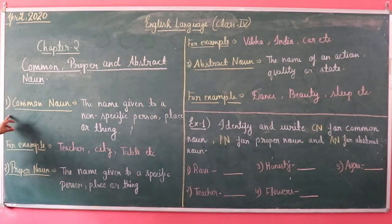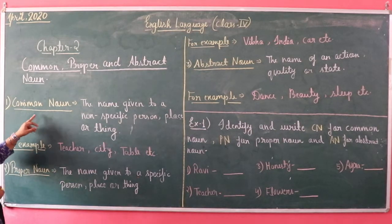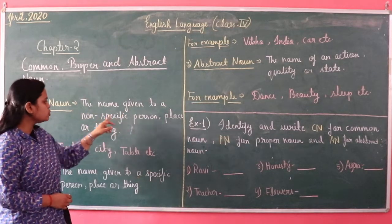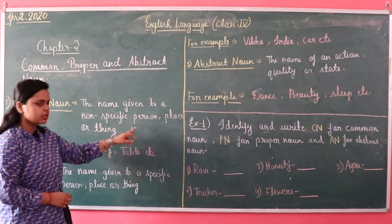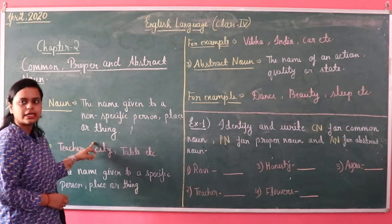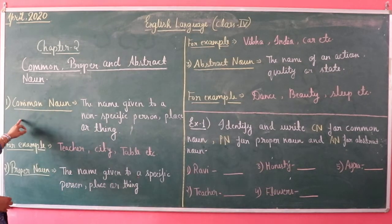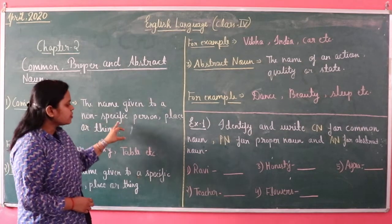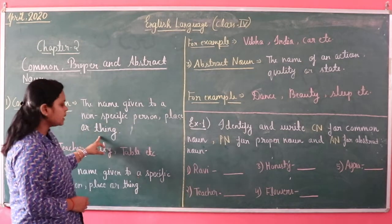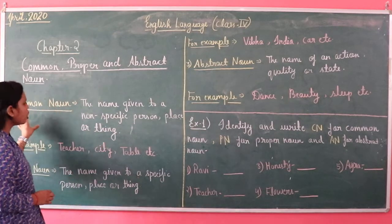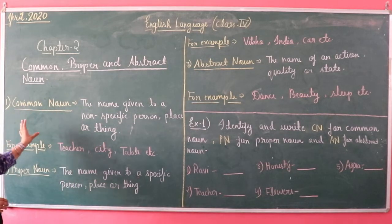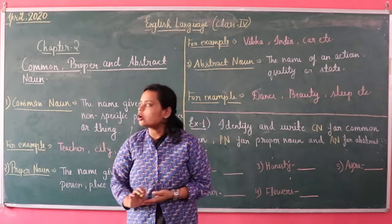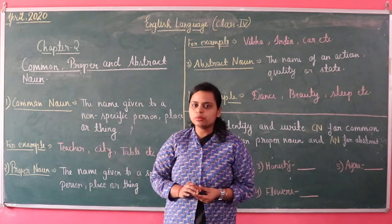The first one is common noun. The definition of common noun is the name given to a non-specific person, place, or thing. It is the name of a group.